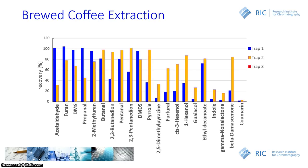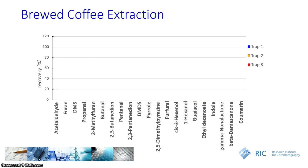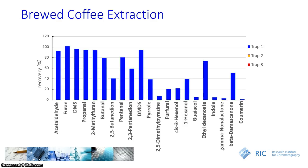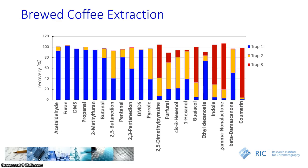Trap 2 and trap 3 are dedicated for the trapping of rather semi-volatile compounds. When using the multivolatile approach, we combine the three traps in one analysis, which results in a better response for all compounds and a more evenly distributed profile for the brewed coffee extraction.